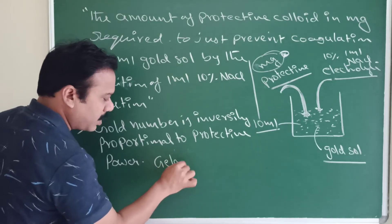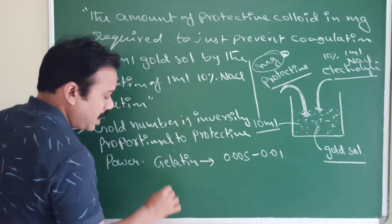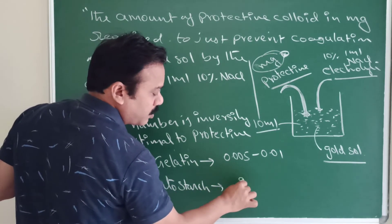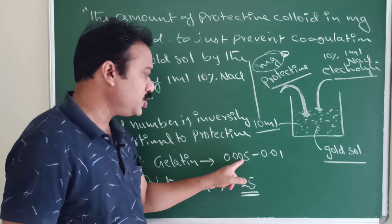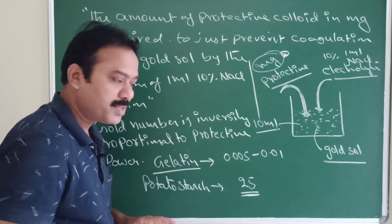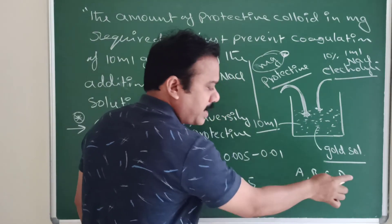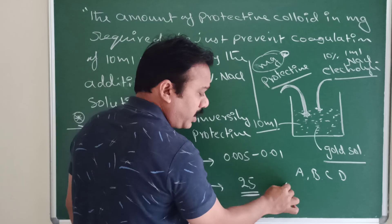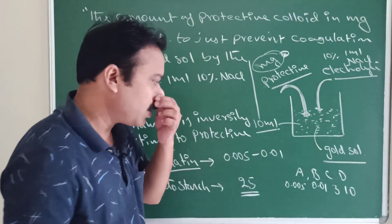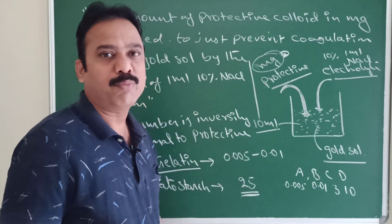For example, gelatin has a gold number of 0.005 to 0.01, while potato starch has a gold number of around 0.005. Gelatin is a powerful protective colloid because of its low gold number. The colloid with the highest gold number is the least powerful protective colloid.